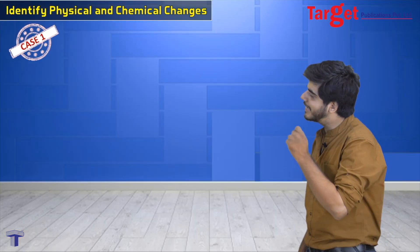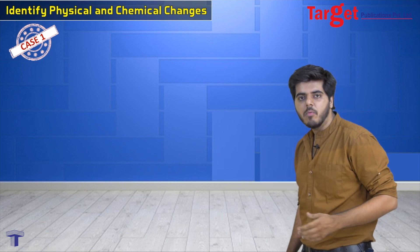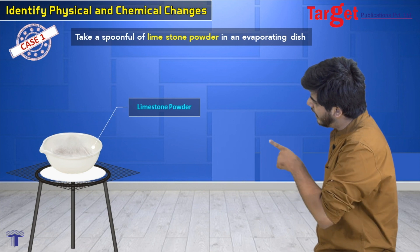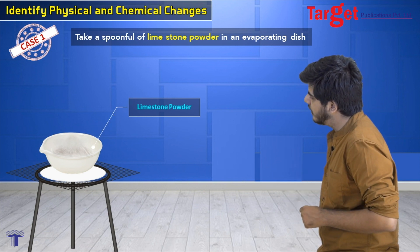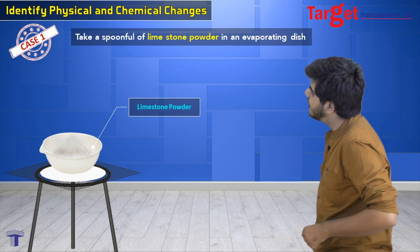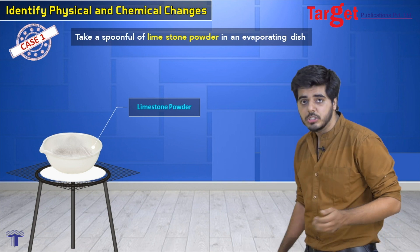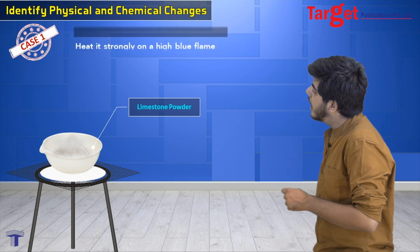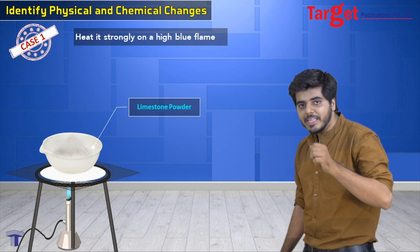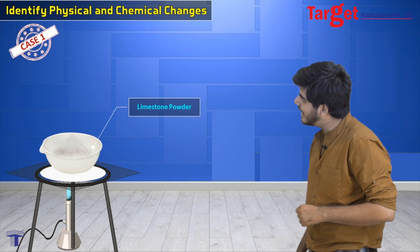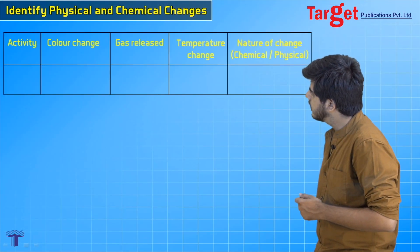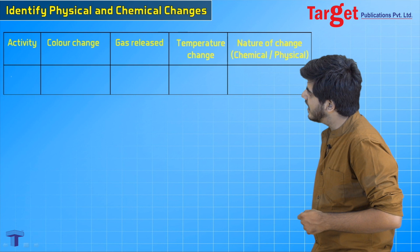Let us move to case number one. In case number one, we are going to take limestone in an evaporating dish kept on a tripod stand. Take a spoonful of limestone powder in the evaporating dish, then heat it strongly on the blue flame of the Bunsen burner. Now we are going to jot down the result.